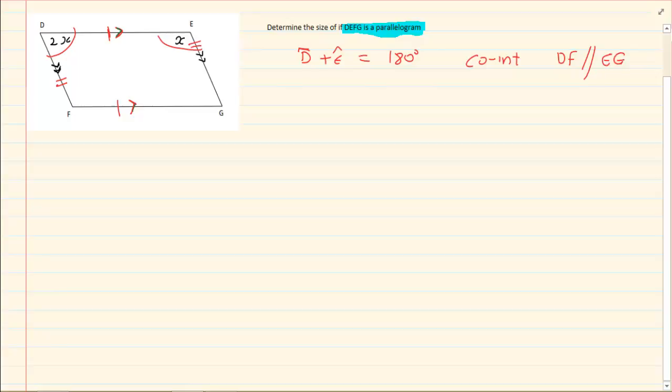It is co-interior angles but how do you know it's co-interior angles? Because DF is parallel to EG. Now how did I decide that? If you look, I am looking specifically at this C, which means that the two parallel lines have to be these two. And that is DF and EG.